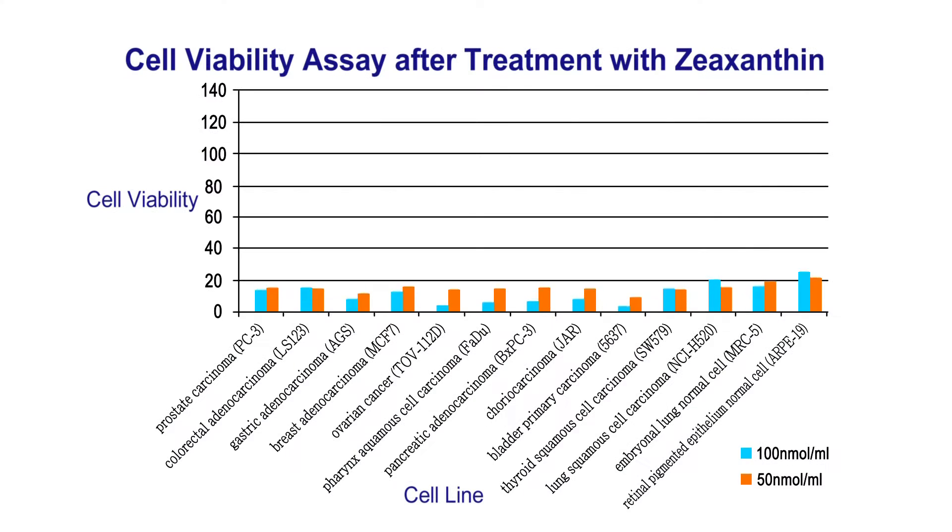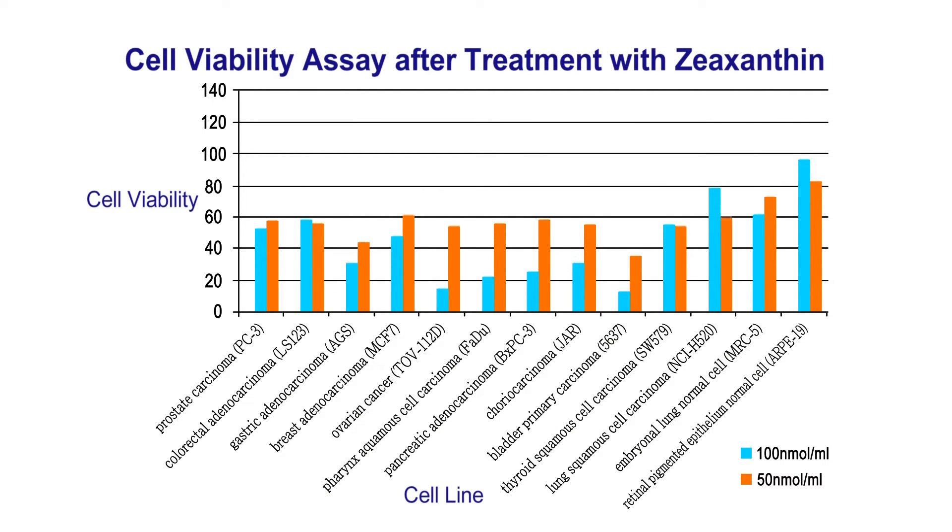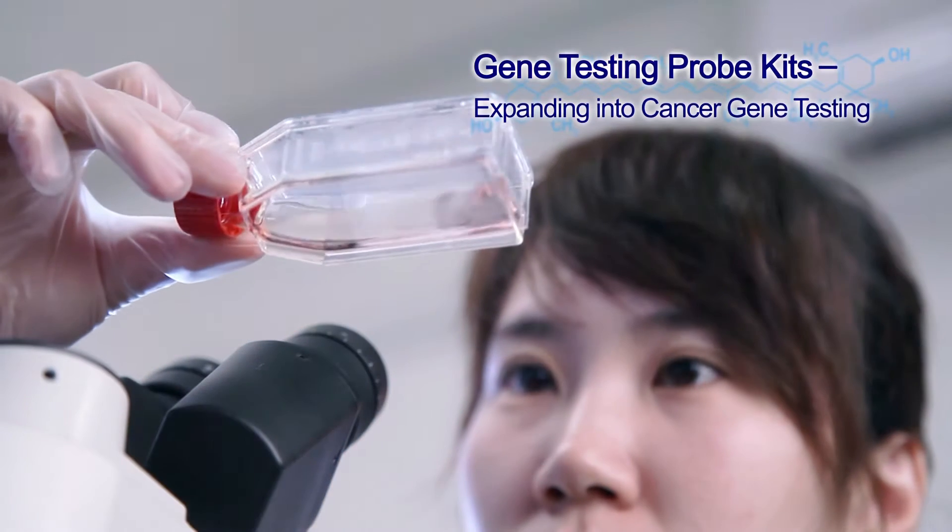With an advantage in zeaxanthin production, VisGener is sending its feelers into the field of cancer gene testing.